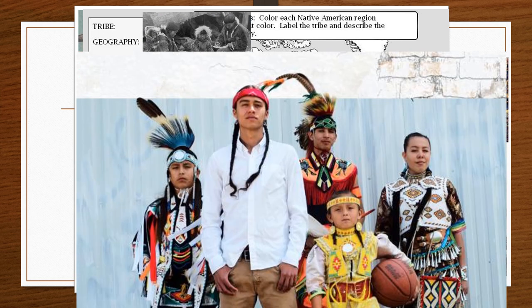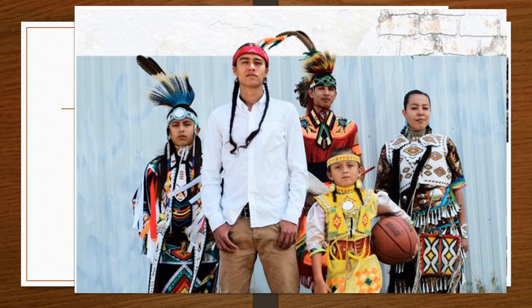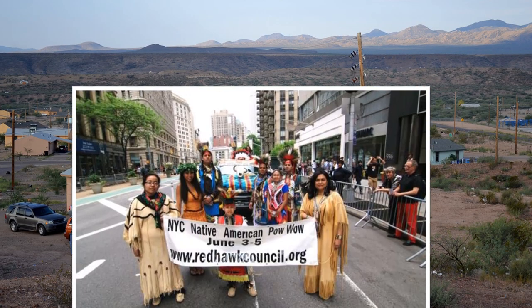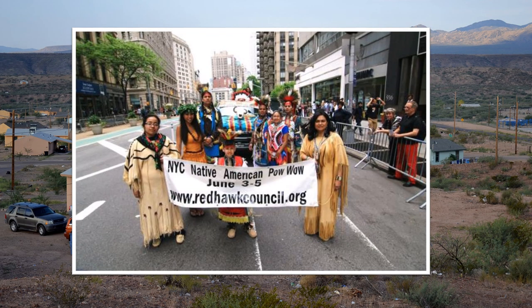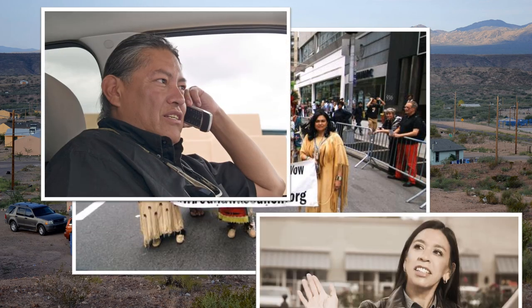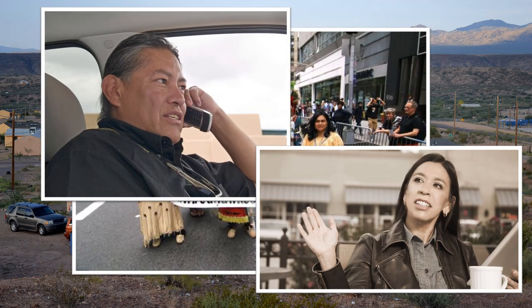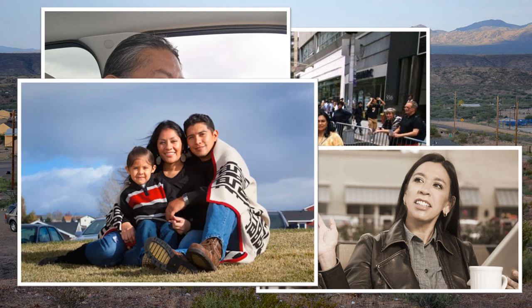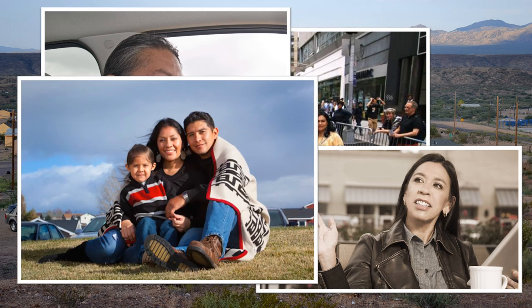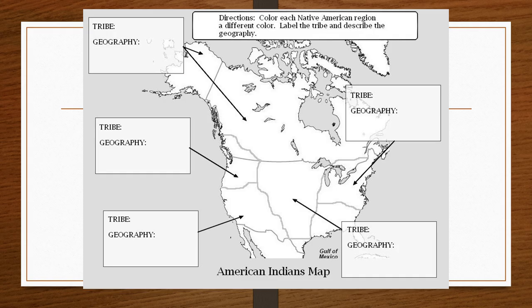Native Americans still exist today but many of them live either on reservations or have integrated into American life and live in cities and towns all over our country. They may not dress in their cultural clothing from the past but nevertheless Native Americans are here. They come from a rich heritage and we will talk more about this in a later lesson. Follow along with your map, color in the region that each tribe lived in, and draw pictures or write key words about the geography in each area.